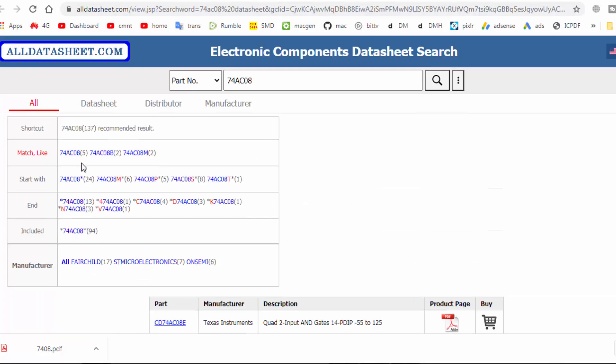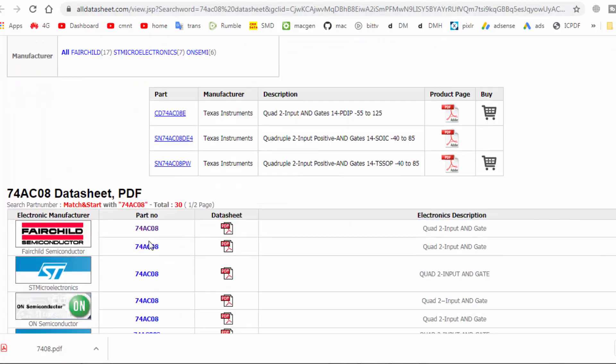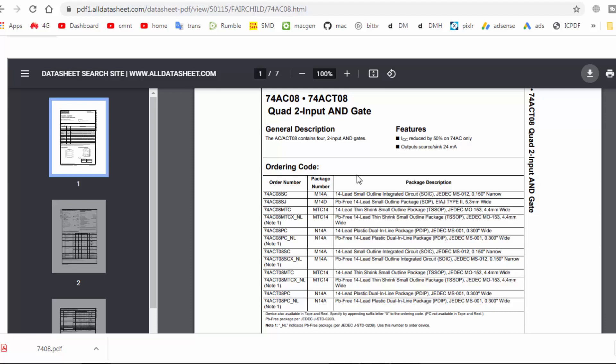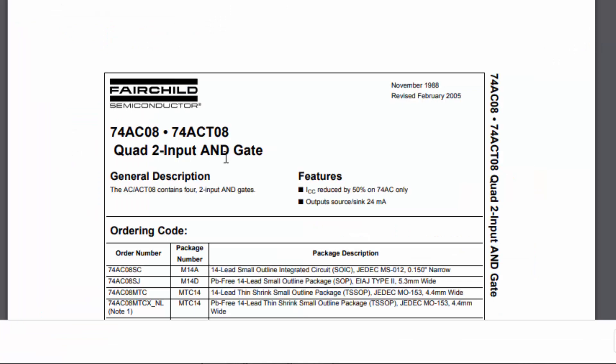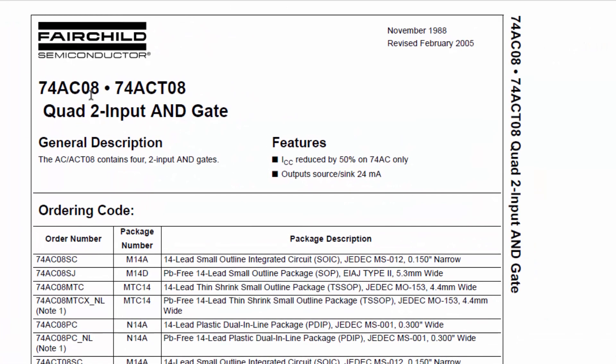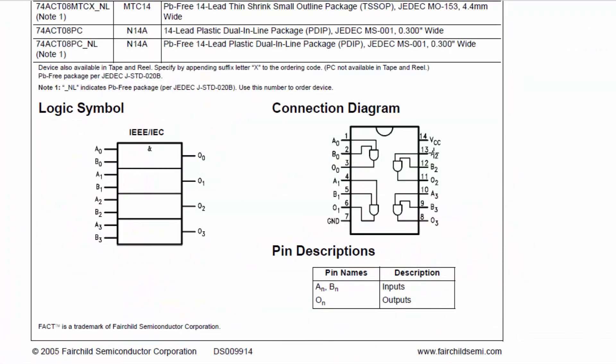Then I visited Google to find its datasheet. I opened the datasheet and it is 7408. So its generic number is 74AC08. I downloaded the datasheet and here we have 74AC08 quad two-input AND gate.